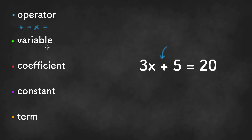Variables are any letter or symbol that represents an unknown quantity. In algebra, you'll most likely be using the letters a through z. In the example, the variable would be the letter x.